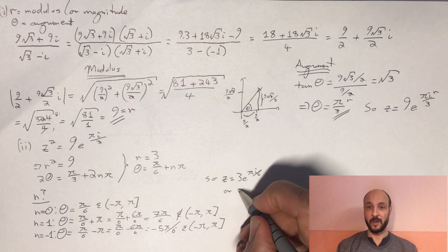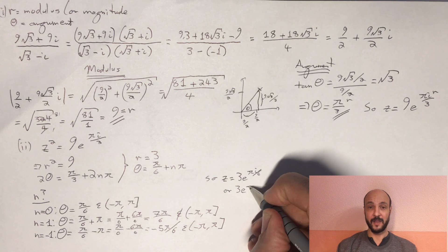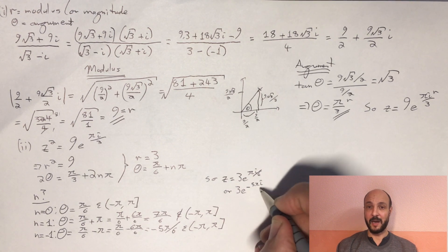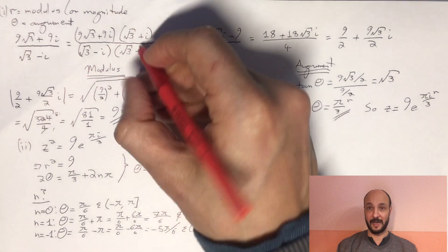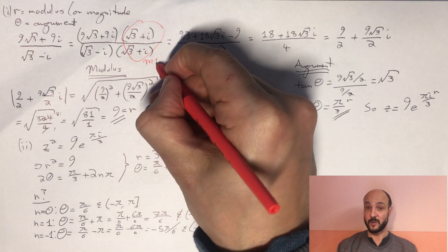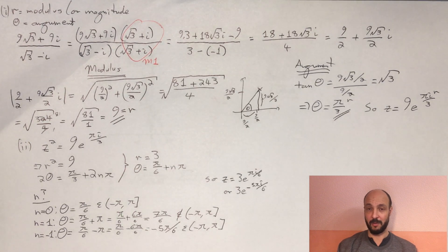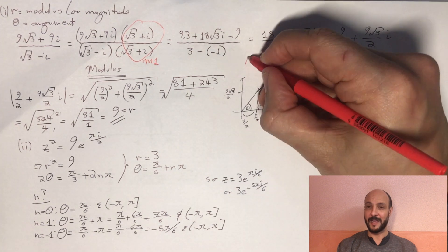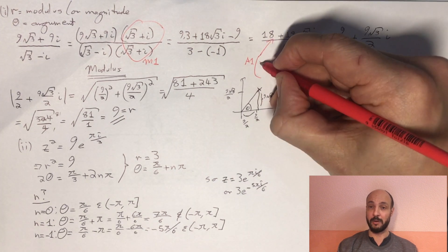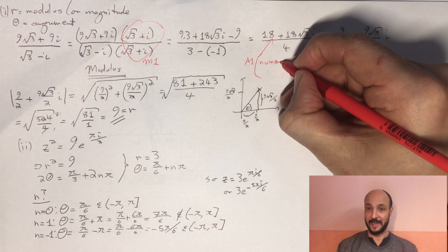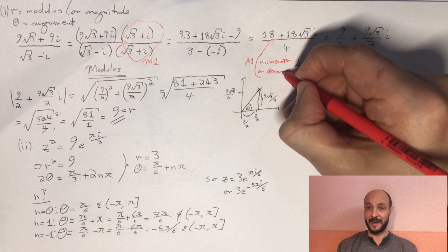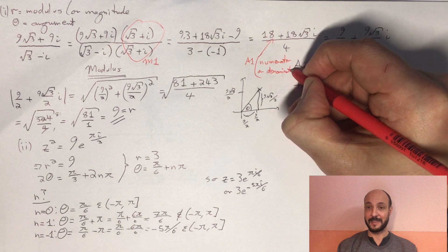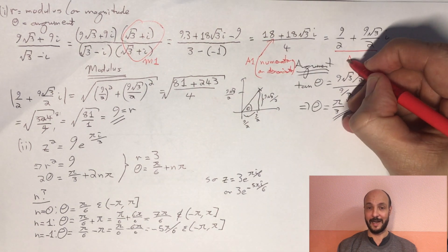And so if we work through and look at our marking for this question, we get our first method mark for the method of multiplying through by √3 + i, showing that we know about this difference of two squares formula. We don't have to be accurate, but we have to apply that technique. And then we get an accuracy mark if we get either a correct numerator or a correct denominator at the stage where we've got 18 + 18√3i over 4, with a third and final accuracy mark for the correct 9/2 + 9√3/2i.